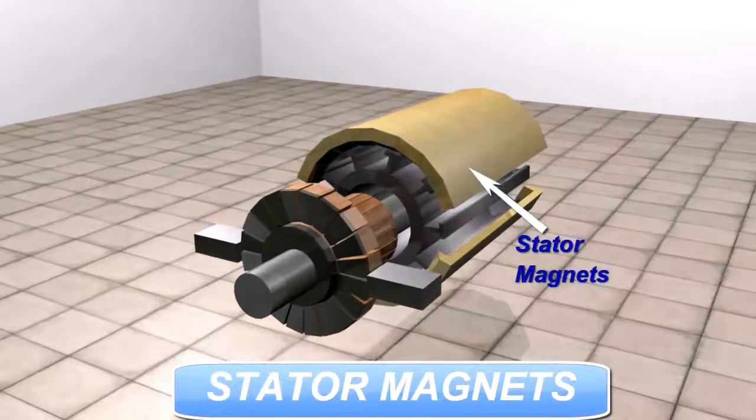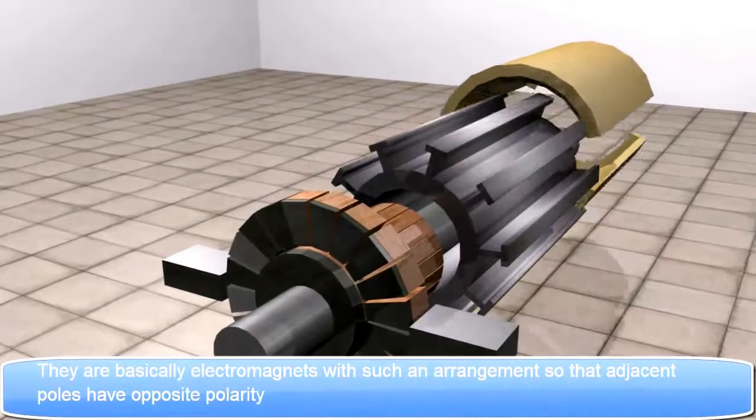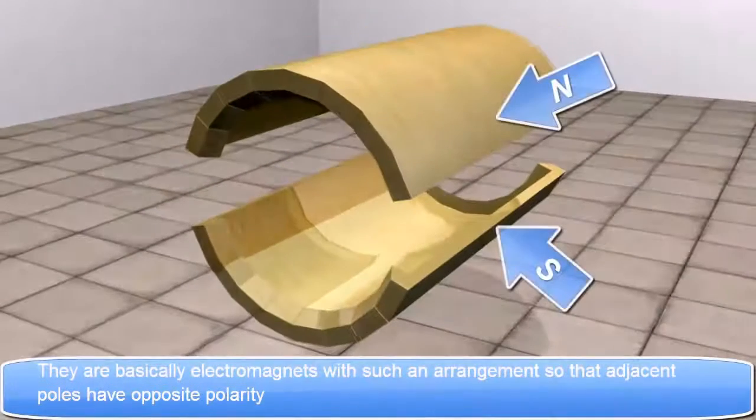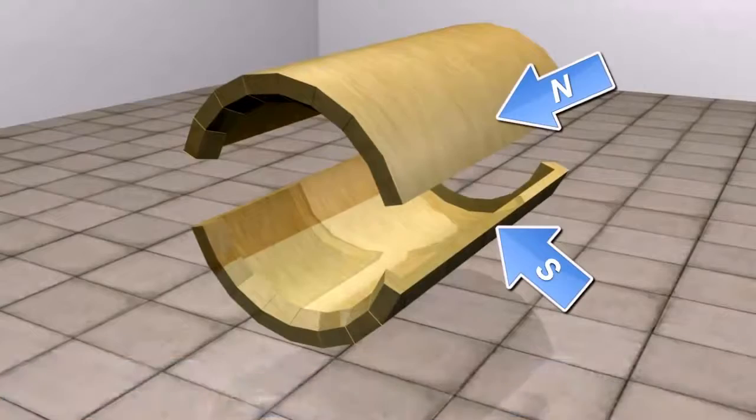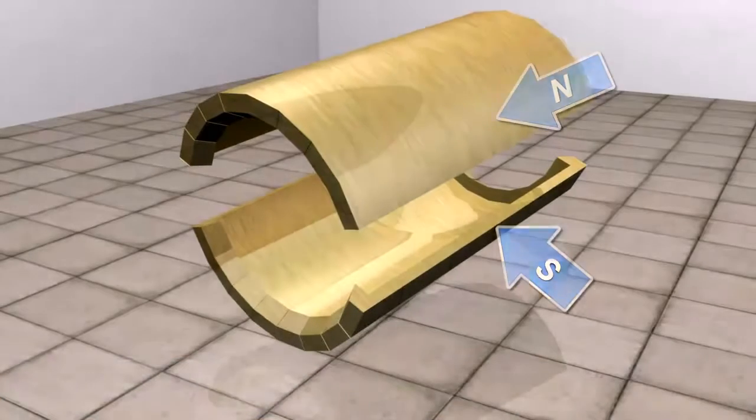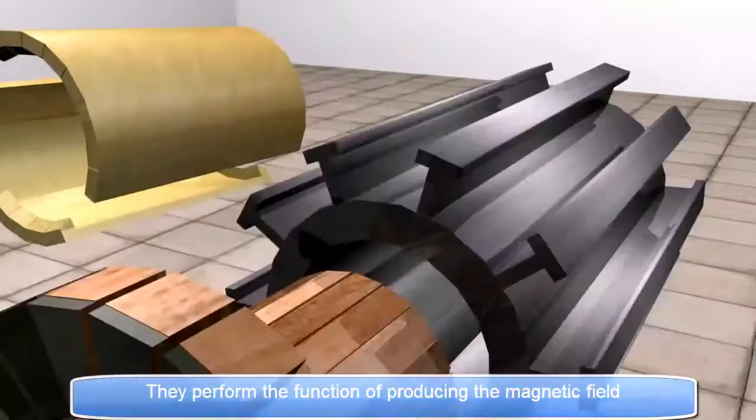Stator Magnets: They are basically electromagnets with such an arrangement so that adjacent poles have opposite polarity. They perform the function of producing the magnetic field.